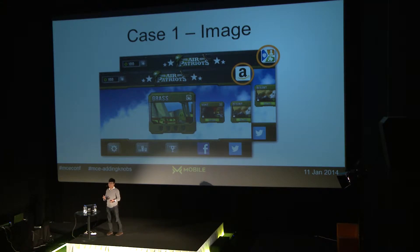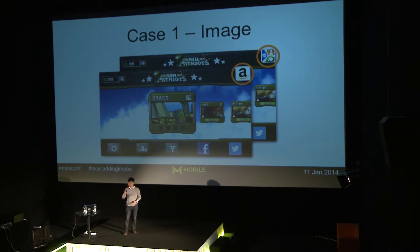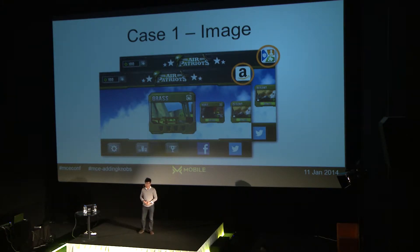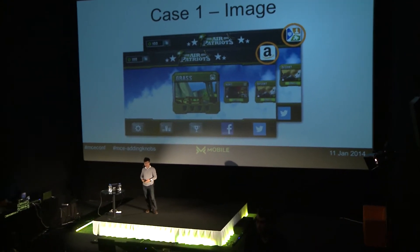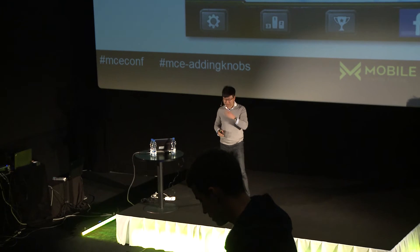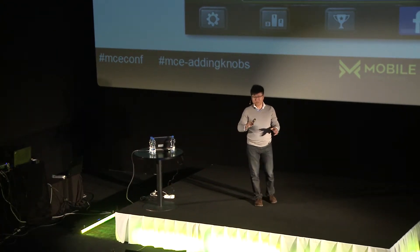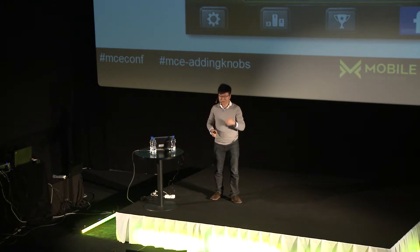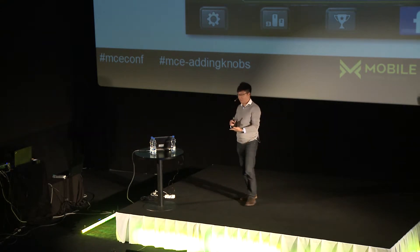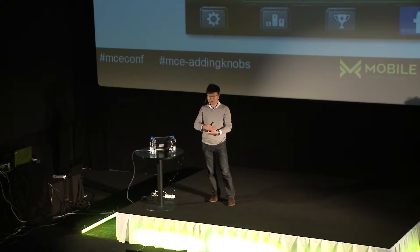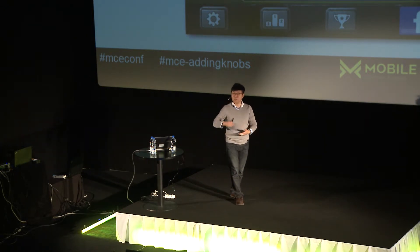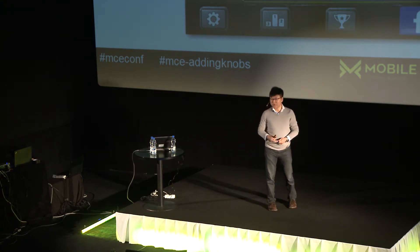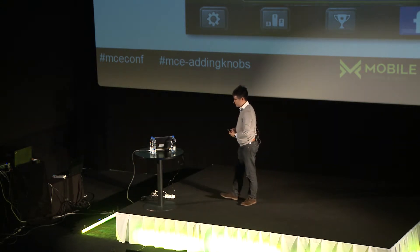The first detailed case is about images — a simple use case. In the game, they tried to place an image telling users there are more games available. They tested two variations: the conventional Amazon logo with the 'A' and smile, versus the Amazon Game Circle logo. They set up the A-B test, real users received one or the other image, and on the server side a reporting tool showed which one generated more clicks — allowing them to decide which image to use at official launch.